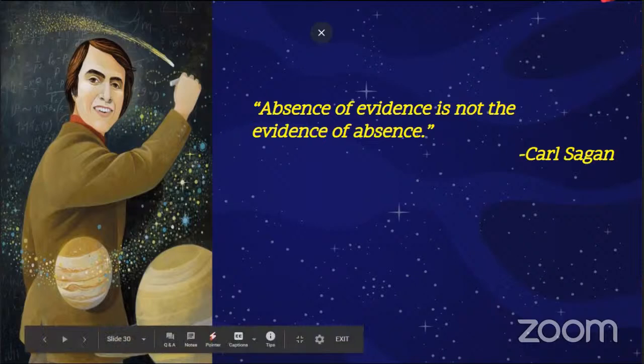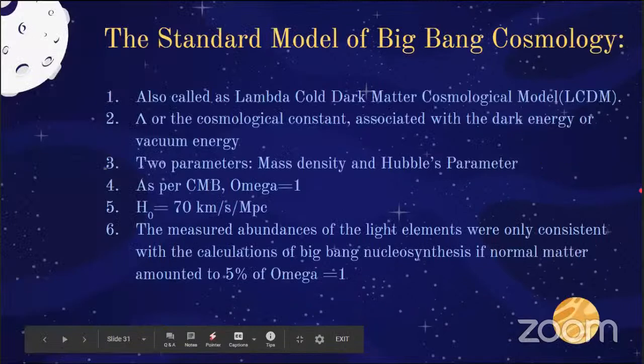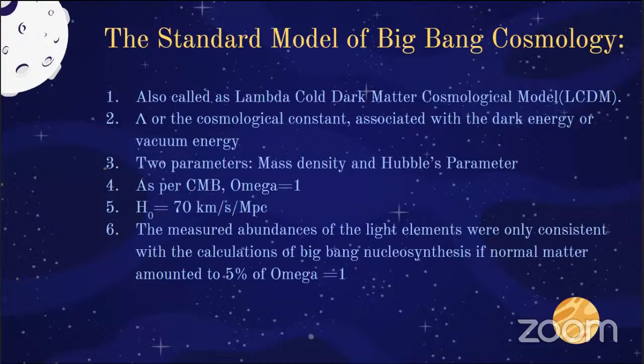Now we've seen the basics of Hubble's law, expanding universe, reasons for redshifting, and dark matter candidates. Let's move to the standard model of Big Bang cosmology — ΛCDM, Lambda Cold Dark Matter. The two observable parameters that constrain the physical properties of the universe are mass density (Ω) and the rate of expansion — Hubble's parameter H₀, estimated at 60–70 km/s/Mpc.